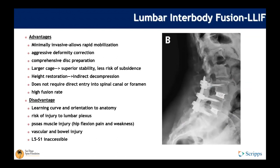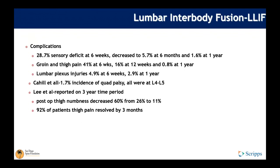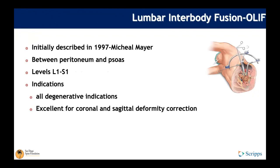The lateral MIS approach allows for rapid patient mobilization and can offer aggressive deformity correction. Even in cases requiring large deformity correction, anterior column realignment can be utilized. Disadvantages include a steep learning curve, difficult anatomical orientation, risk of injury to the lumbar plexus, and difficulty accessing L5-S1. Vascular or bowel injury incidence is lower than with ALIF but not zero.